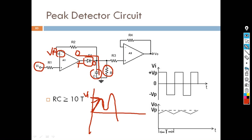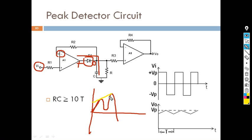Our output will follow and catch each new peak. This is the peak detection signal — depending on the signal, the detected peak may go higher or come down as well. Please note that here we are trying to detect the positive peaks, not the negative peaks. This is the way our peak detector works.